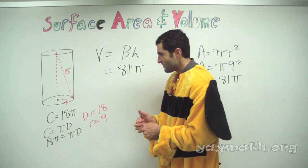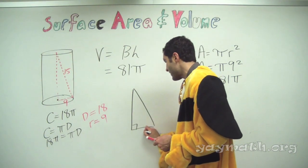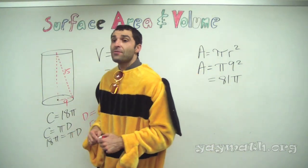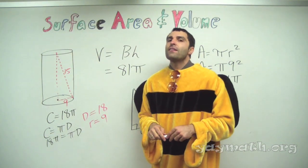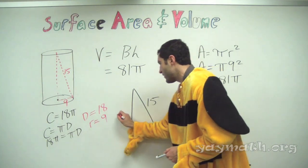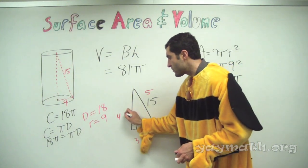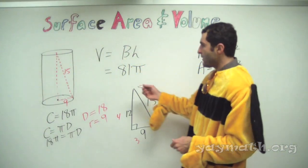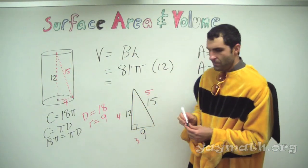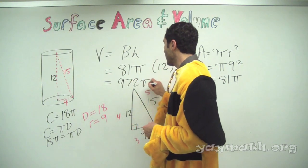It's a 3-4-5 times three — so the sides are 9, 12, and 15. That makes the missing height 12. What's 81π times 12? The volume is 972π units cubed.